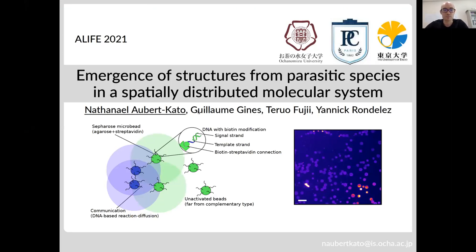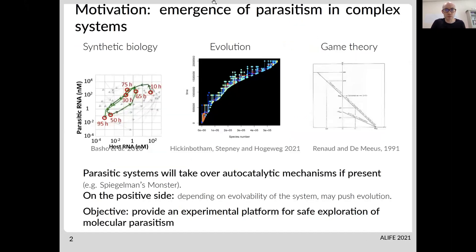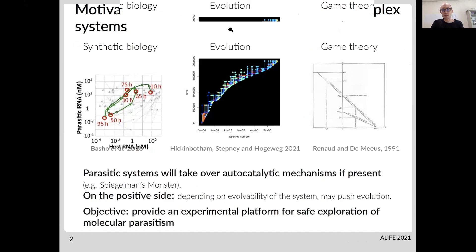Thank you. So I'm Nathanael Hubert-Kato from the Ochenomizu University in Tokyo, and I will present the work I realized with some of my colleagues from the ESPCI in Paris and the University of Tokyo. The motivation for this work was the evolution of parasitism in complex systems.